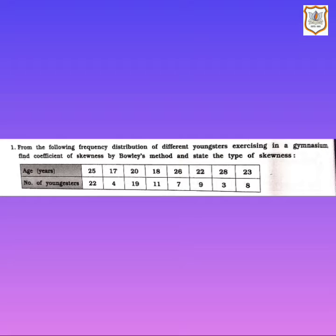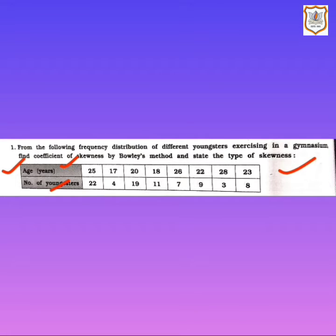Let's solve the sums related to Bowley's method from Exercise 5.2. Sum number one reads: from the following frequency distribution of different youngsters exercising in a gymnasium, find the coefficient of skewness by Bowley's method and state the type of skewness. Here, age is given and number of youngsters (frequency) is given — this is a discrete data sum.